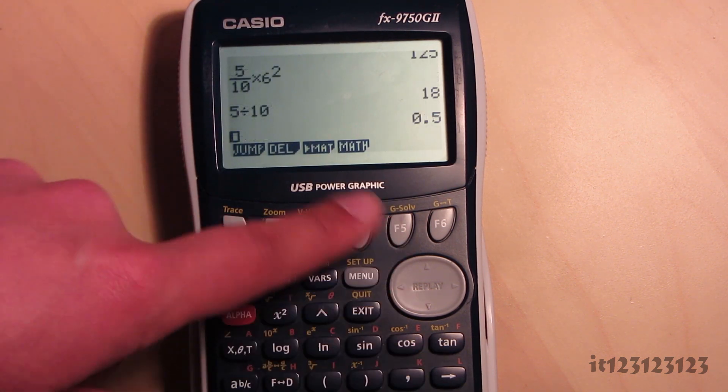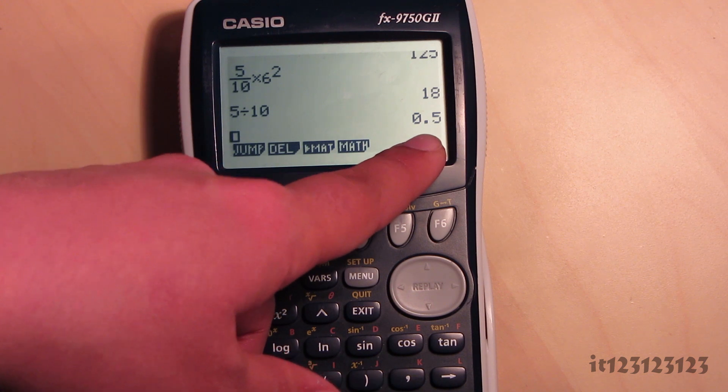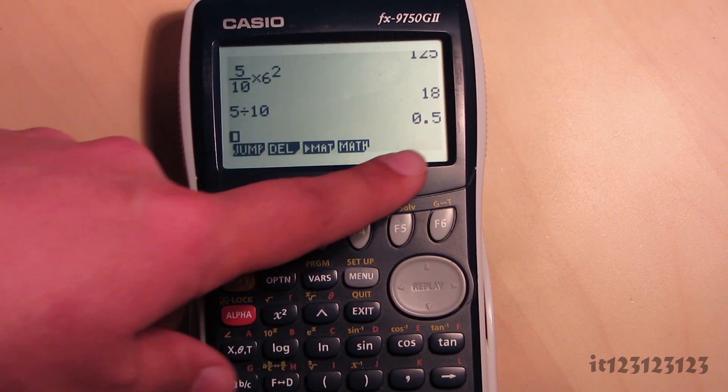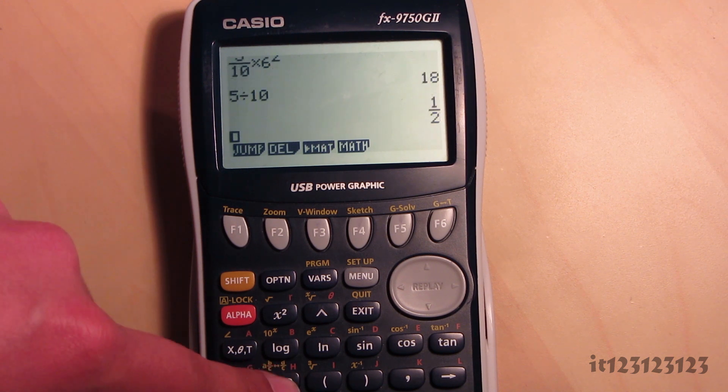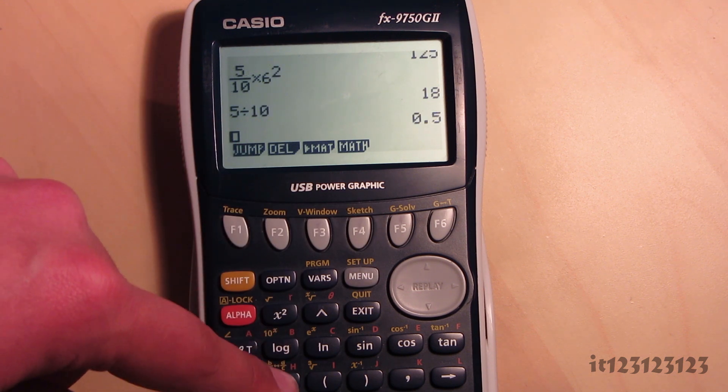If an answer comes out as a fraction, it will either display as a decimal or as a fraction. And you can convert between them by pressing the F to D key right at the bottom here. As I press it, you can see that the output changes corresponding to fraction to decimal.